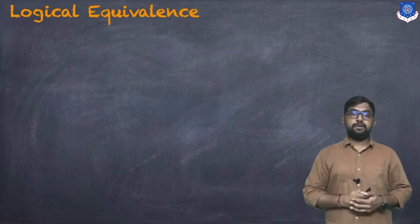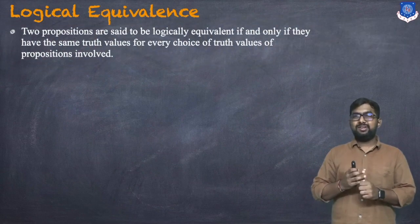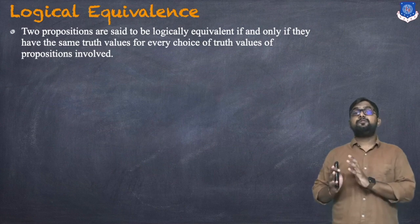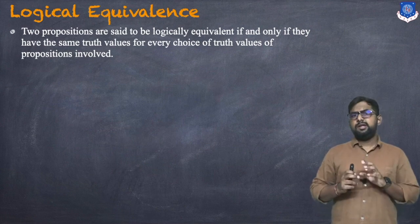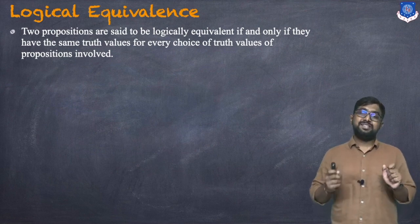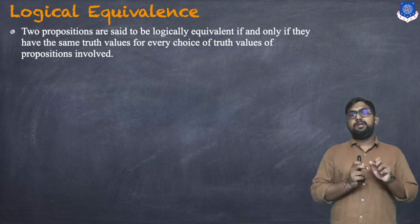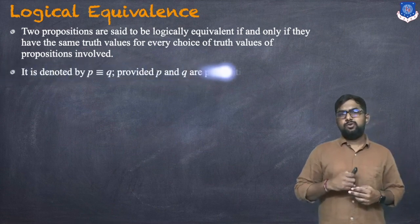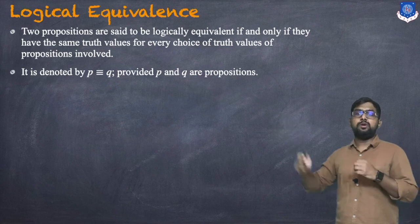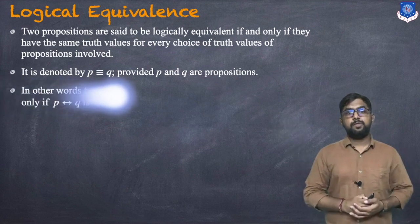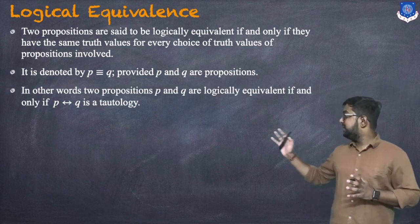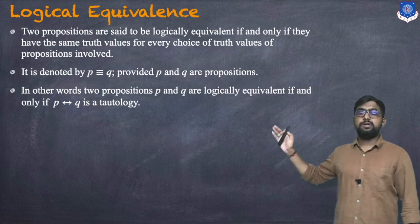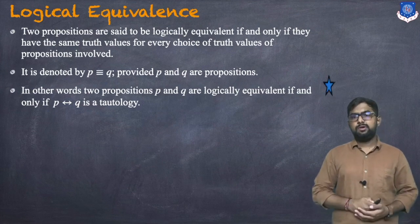Now let us discuss logical equivalence. Two propositions are said to be logically equivalent if and only if they have the same truth values for every choice of truth values of the propositions involved. It is denoted by p≡q. In other words, p and q are logically equivalent if and only if p↔q is a tautology.